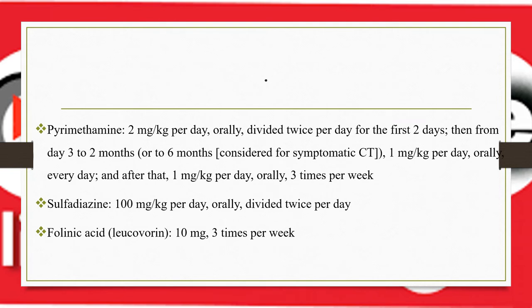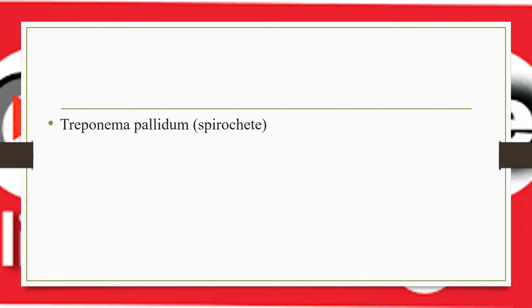Specific dosing: pyrimethamine 2 mg/kg/day orally divided twice daily for the first two days, then 1 mg/kg/day orally daily from day 3 to two months (up to six months), then 1 mg/kg/day orally three times per week to complete 12 months. Sulfadiazine 100 mg/kg/day orally divided twice daily. Leucovorin (folinic acid) 10 mg three times per week.